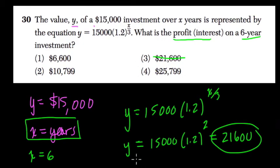They want to know the profit. So it's $21,600 minus $15,000. How much do we really make over those years? Because $21,600, that's $6,600 more than what we had originally. That's our profit.